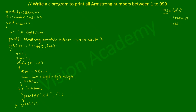Let us look at the program output and trace the flow. When we compile and run the program, it prints "Armstrong numbers between 1 to 999" and starts iterating with the for loop. For i = 1, since 1 <= 999 the condition is true, so control enters the loop body. i is equated to n, and sum is set to 0.